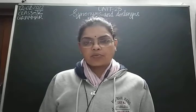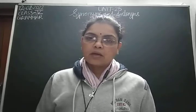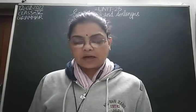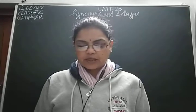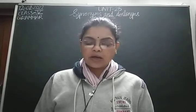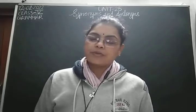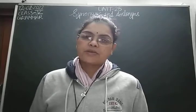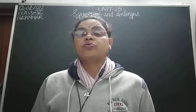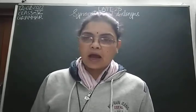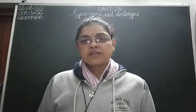Please take out your English grammar book, turn to page number 108, Unit 25, Synonyms and Antonyms. First of all, I am going to explain what synonyms are. Words with similar meanings are called synonyms. You can see in the pink box on page 108, there are 24 synonyms. Antonyms are words with opposite meanings - synonyms have same meanings, antonyms have opposite meanings. There are 30 antonyms given on page number 109.